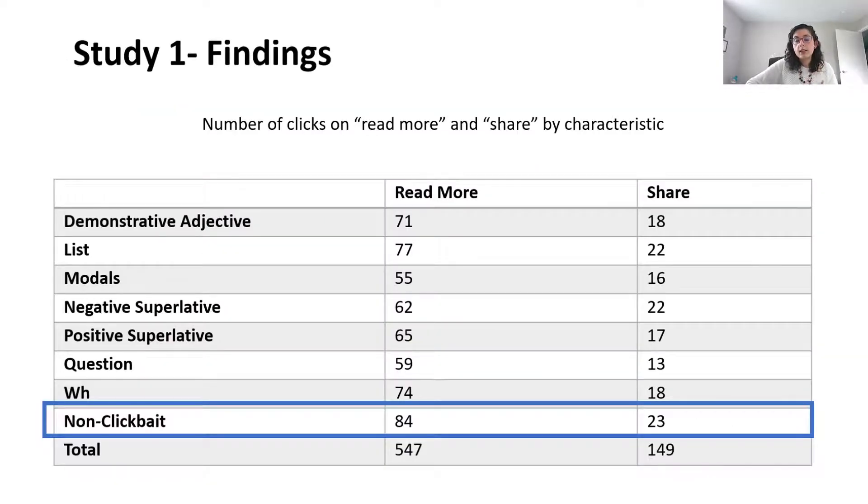We found that non-clickbait received significantly more reads than five of the clickbait characteristics, and the same as the other three. Non-clickbait was also perceived as more credible and less deceptive, and more curiosity arousing.